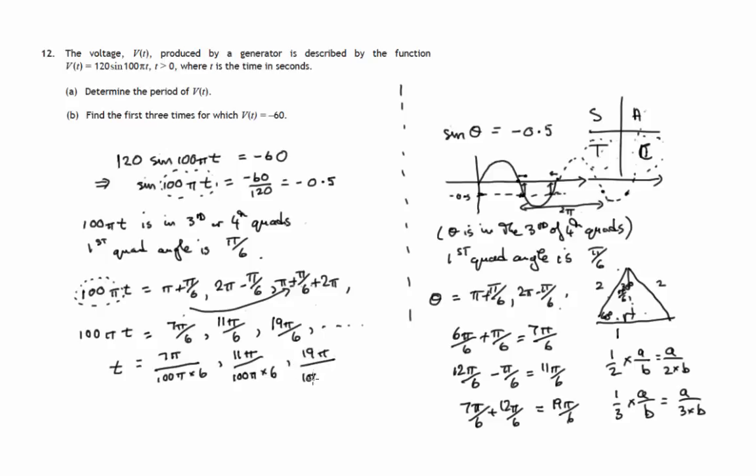So there's 100 pi goes in there. So the pi in each of these fractions will cancel. We divide top and bottom by pi. And in this first case, we get 7 over 600. In the second case, we get 11 over 600. Remember, we're dividing by pi, so the pi cancels out. And in the third one, we get 19 over 600. So the first three times for which v of t equals negative 60 are these.